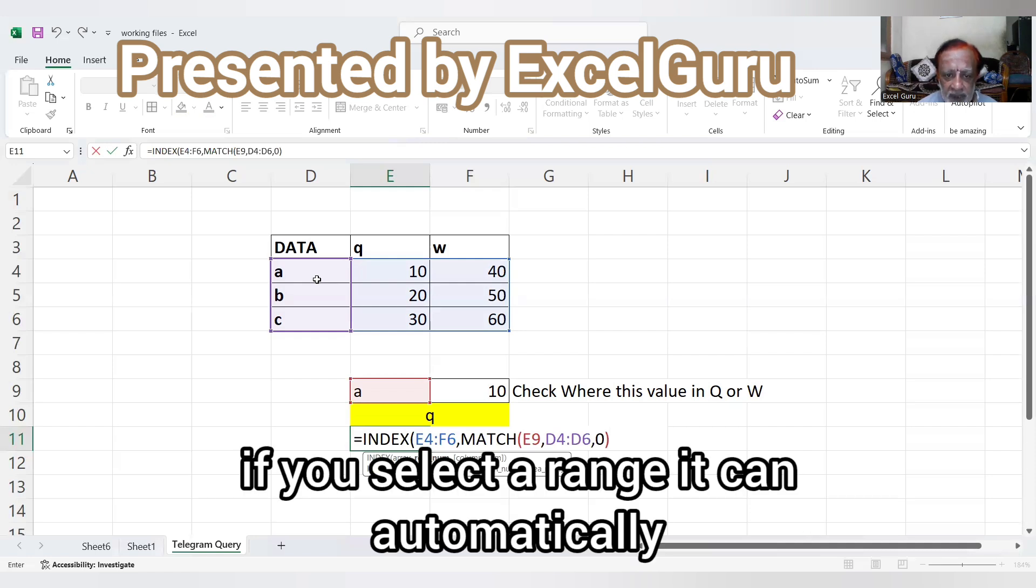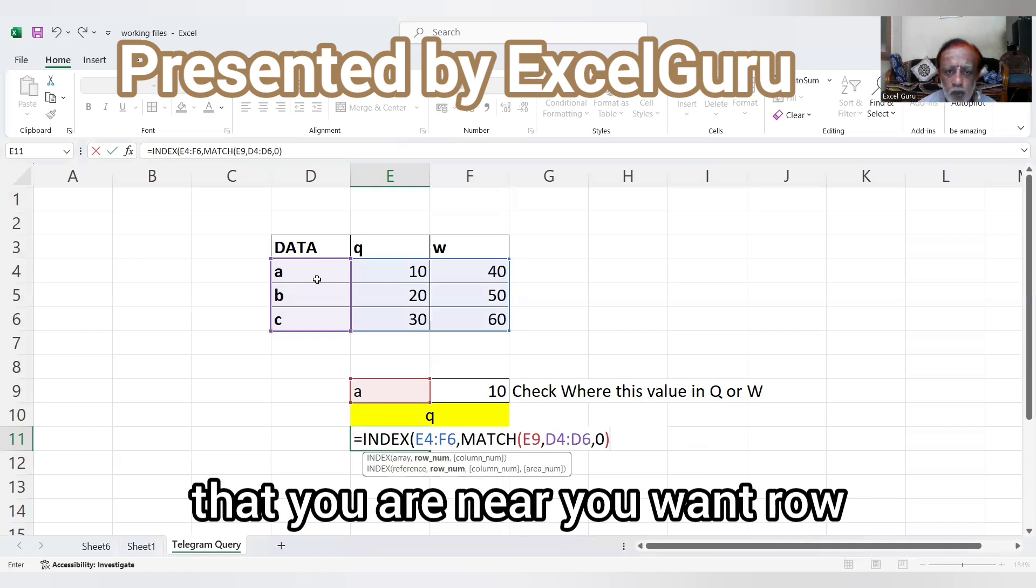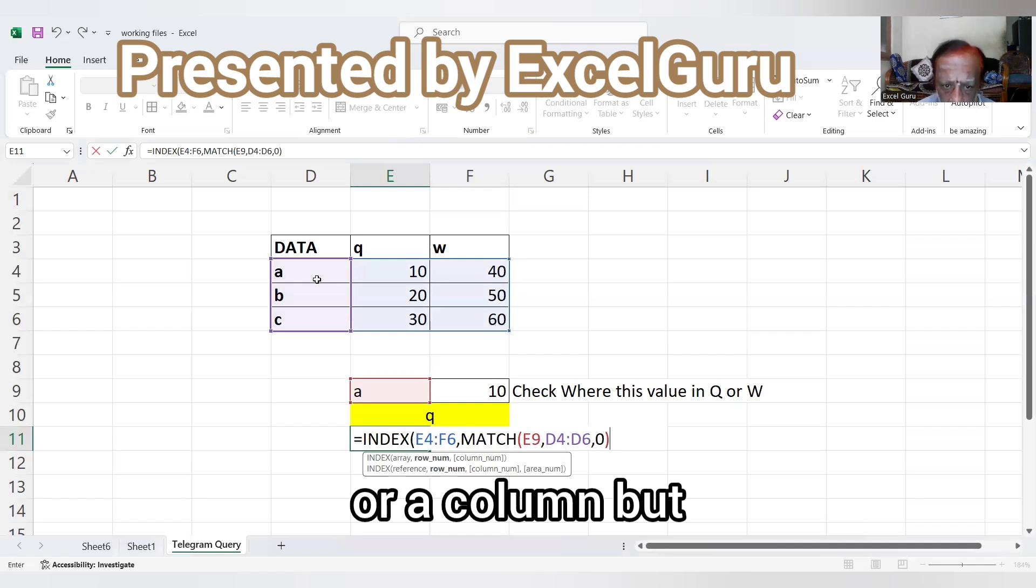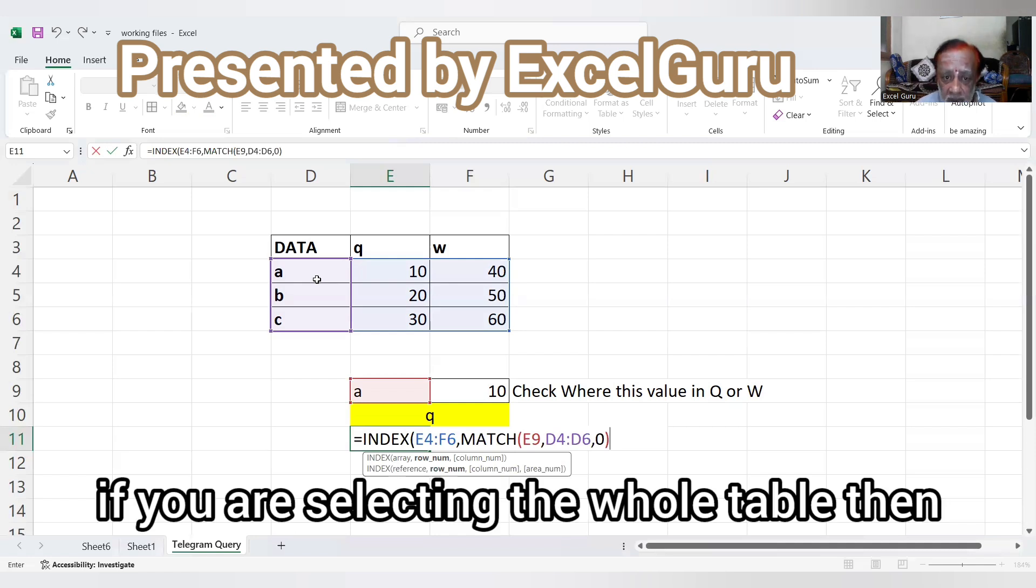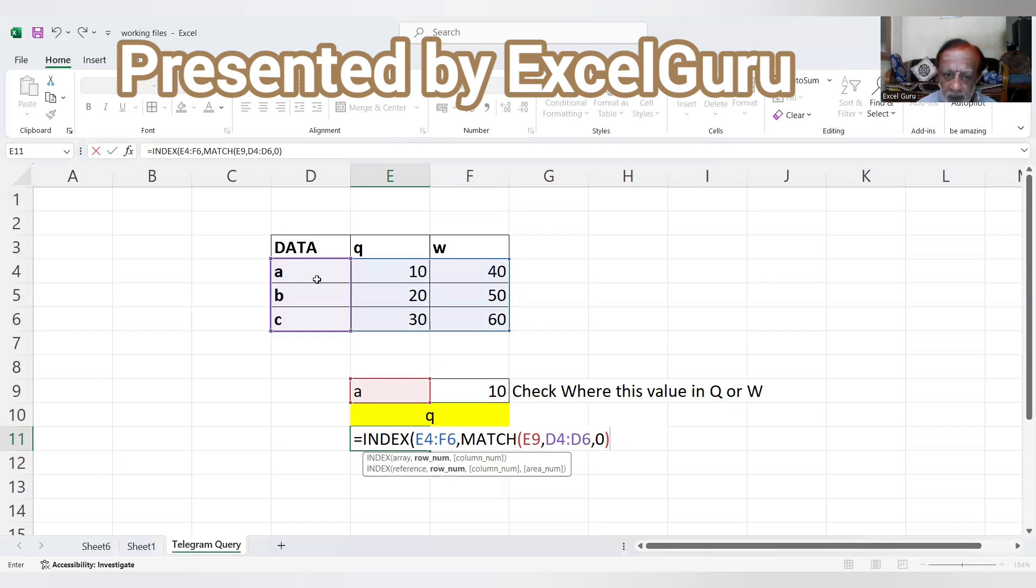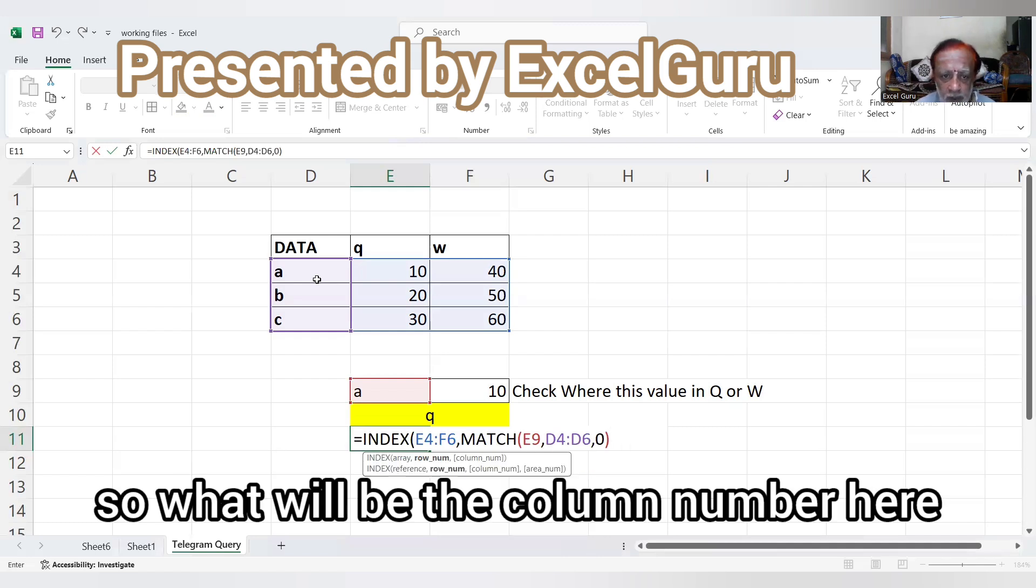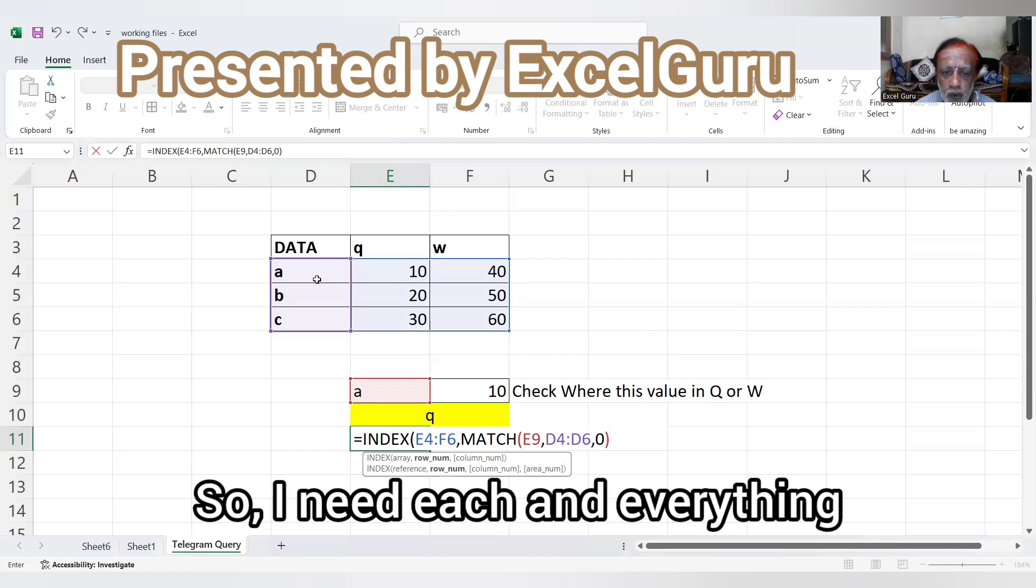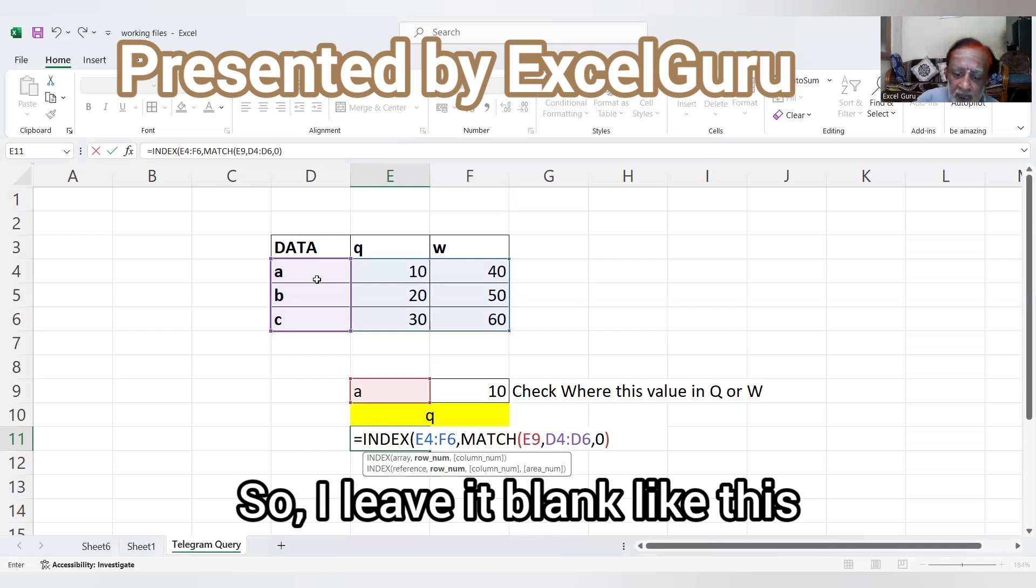So what about the column? If you select the whole table, it will ask the column number also. If you select a range, it can automatically understand that you only want row or column. But if you're selecting the whole table, then you have to mention the column number.